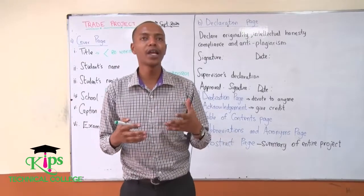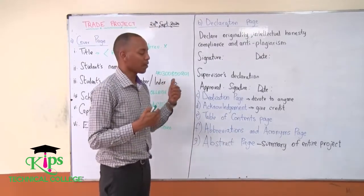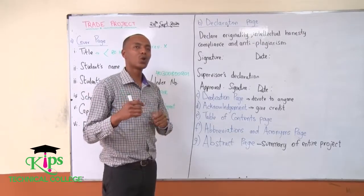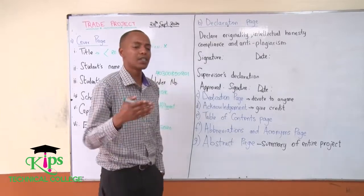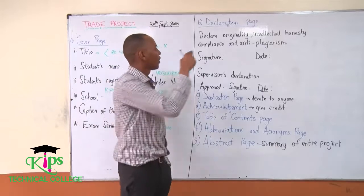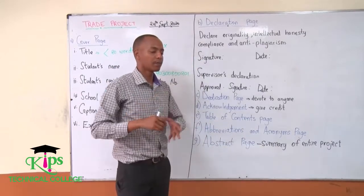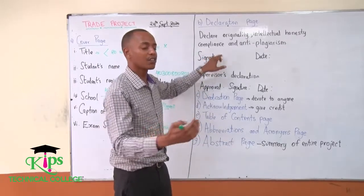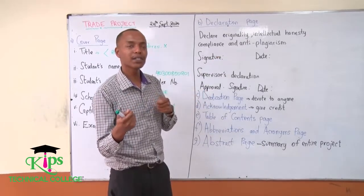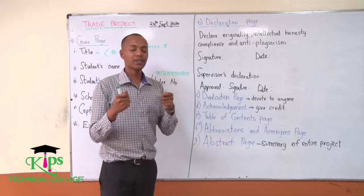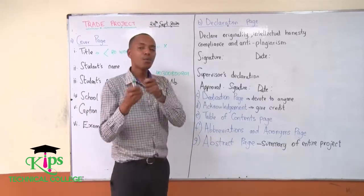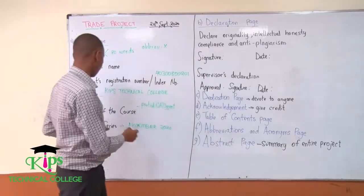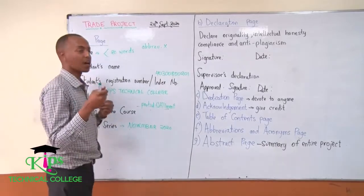Under the declaration page, you are declaring the work as yours. You say that this work is originally mine, you talk about intellectual honesty — saying that it has not been presented in any other institution, and that it has complied with the required sets of governance. For example, a banking and finance student should not present a project more related to food and nutrition, as that means they have not complied with the requirements of their course.